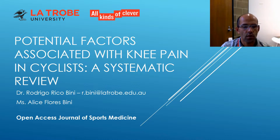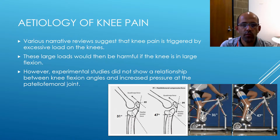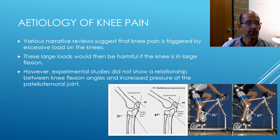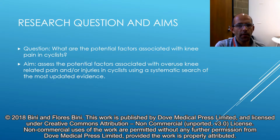This is a systematic review published at the Open Access Journal of Sports Medicine. Various narrative reviews suggest that knee pain is triggered by excessive load on the knees. These large loads would be harmful if the knee is in large flexion. However, experimental studies did not show a relationship between flexion angles and increased pressure from more joint loading. Therefore, the question we would like to address is: what are the potential factors associated with knee pain in cyclists?